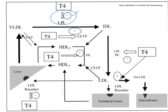T3 and T4 also have a positive effect on CETP — cholesterol ester transfer protein. The function of CETP is to exchange cholesterol esters for triacylglycerols: it takes triglycerides from VLDL, IDL, and LDL, and in exchange gives cholesterol ester from HDL. So VLDL, IDL, and LDL give triglycerides to HDL, and HDL in return gives them cholesterol ester — a process stimulated by T3 and T4.